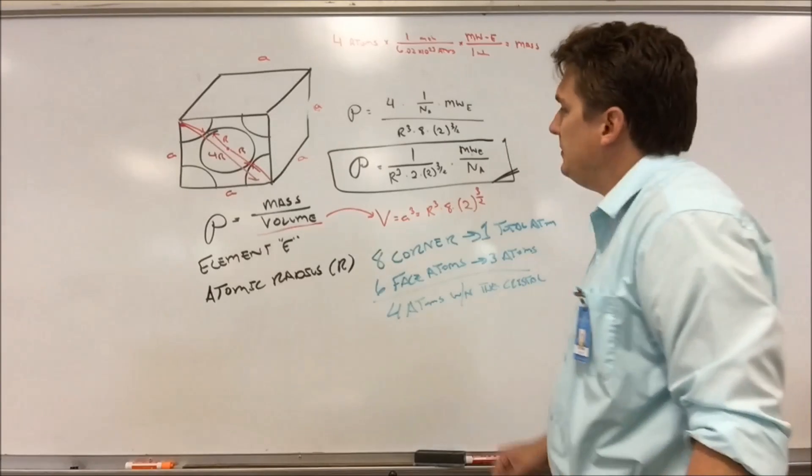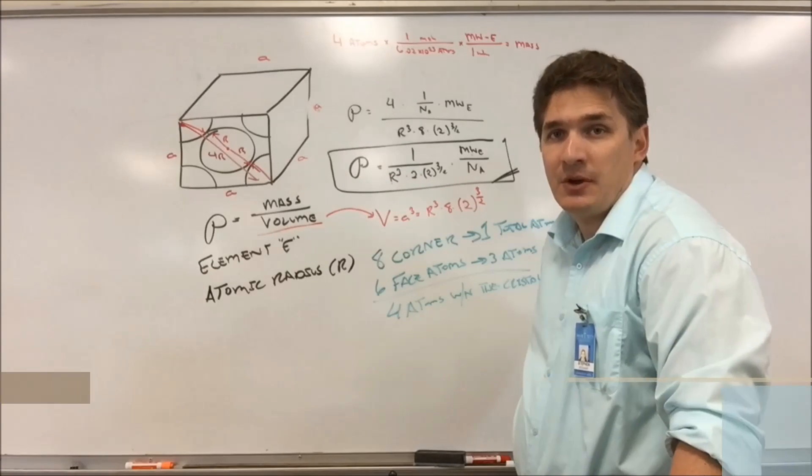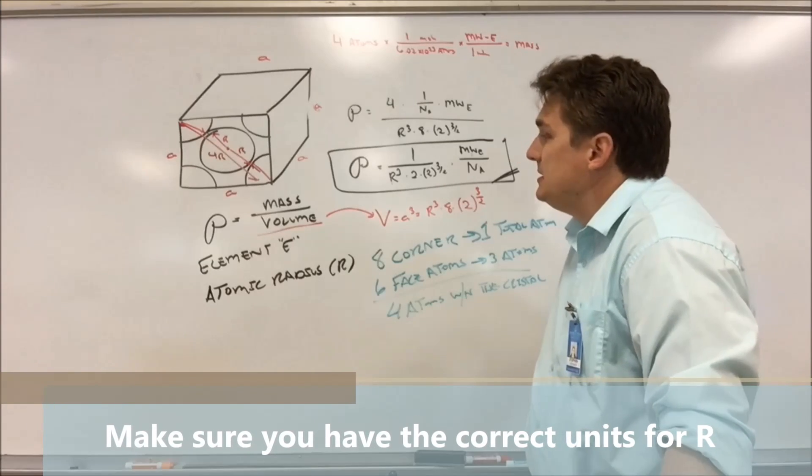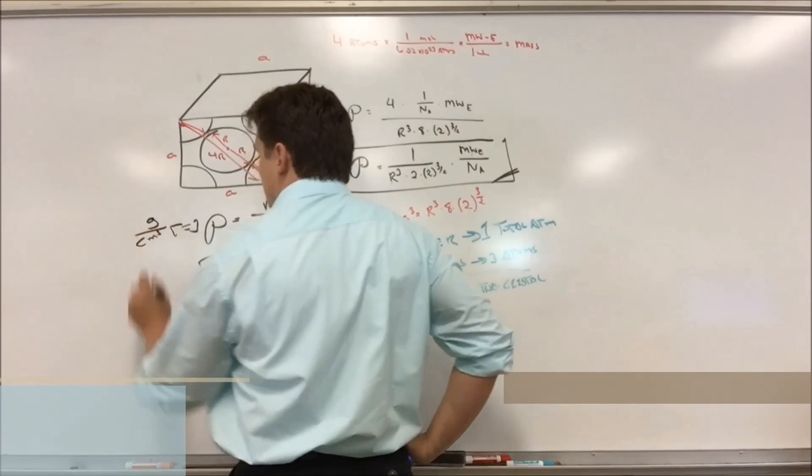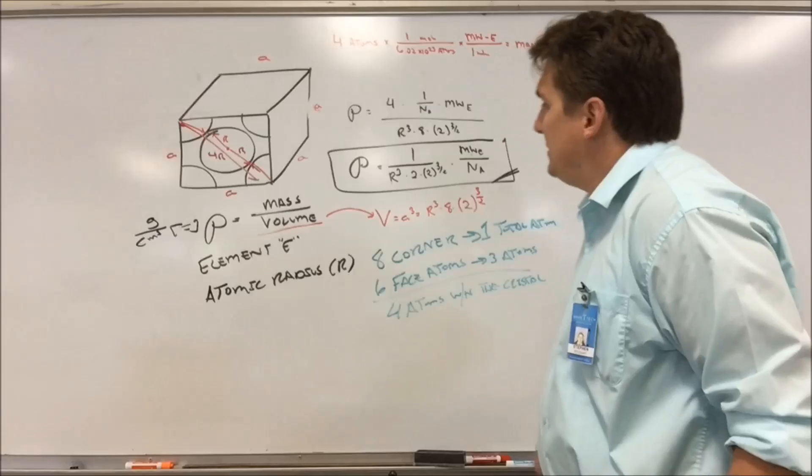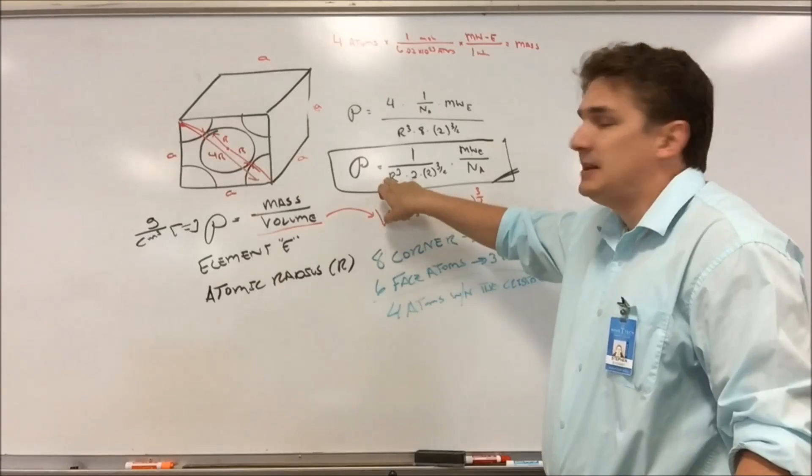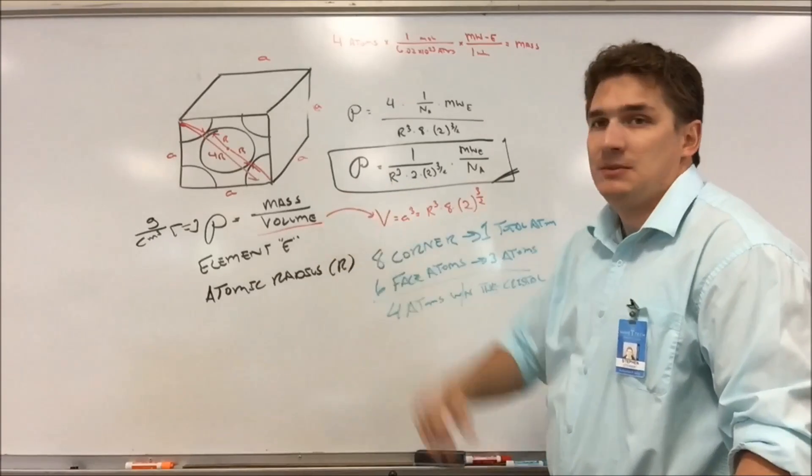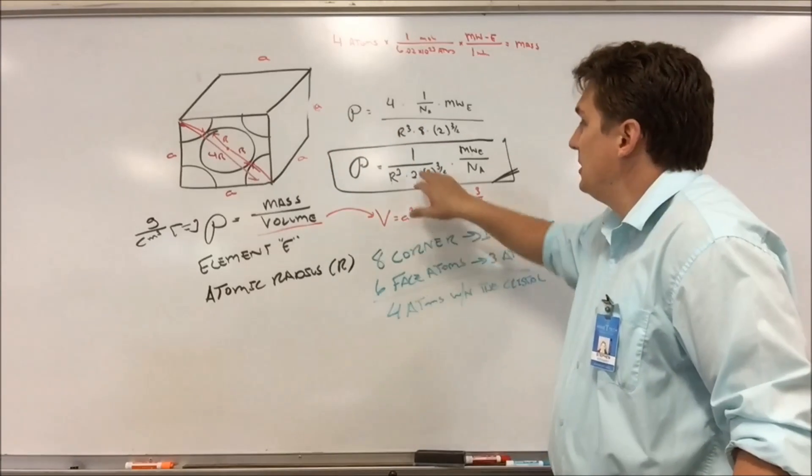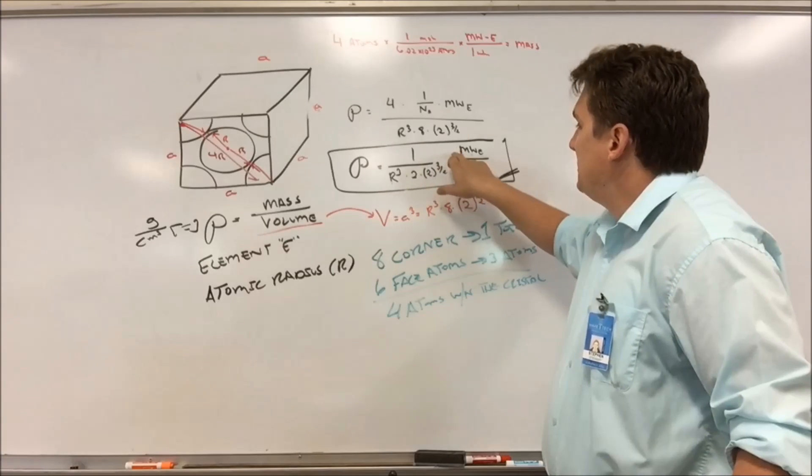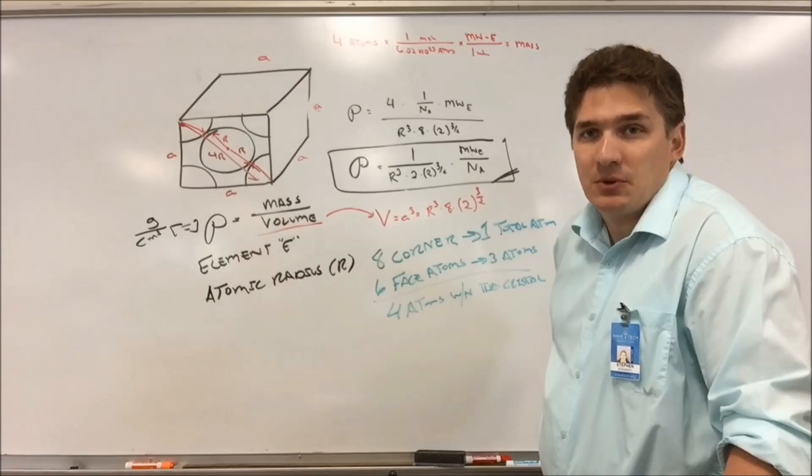Now, here's the challenging thing for you. R is typically given in units of angstroms or nanometers, so either 10 to the minus 10 or 10 to the minus 9 meters. Typically, when we look at density though, we like density in terms of grams per cubic centimeters. So you're going to have to make sure you have the right units here to get the units you want. If R is given to you in terms of angstroms or nanometers, you're going to have to convert R to centimeters to give you centimeters cubed. Other than that though, everything else should follow for an FCC crystal. Plug in this formula, make sure you've got the correct units for R, make sure you've got the molecular weight and you're using Avogadro's number correctly, and you should get a density typically between one or ten depending on the material you're working with.